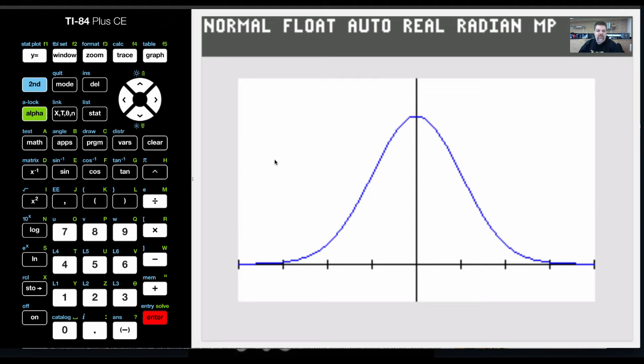Okay, so in previous videos we found the probability based on z-scores, and now we're going to do the inverse of that. We're going to be given a probability and then try to figure out some sort of z-score associated with that probability.